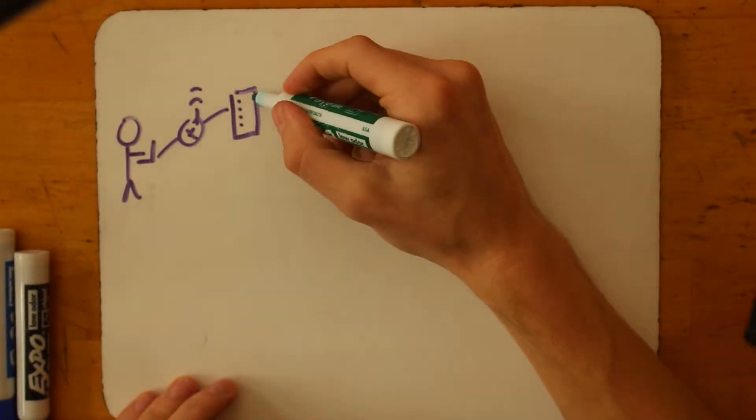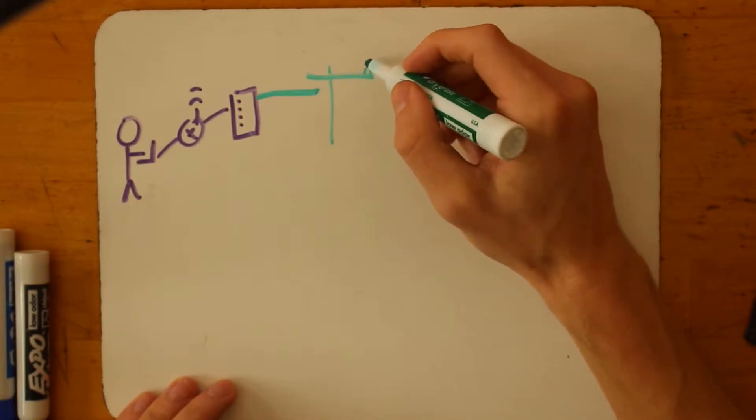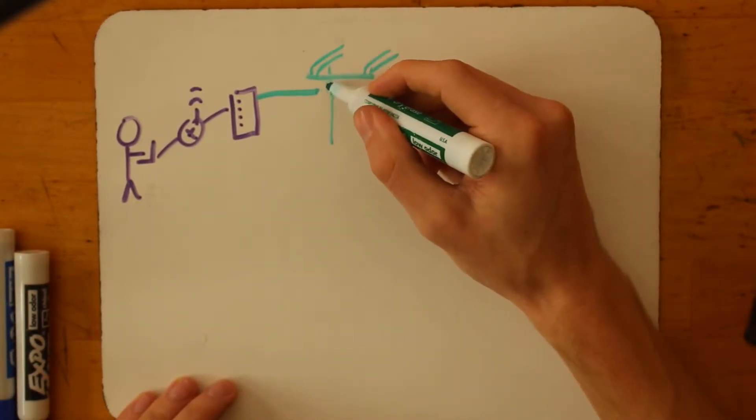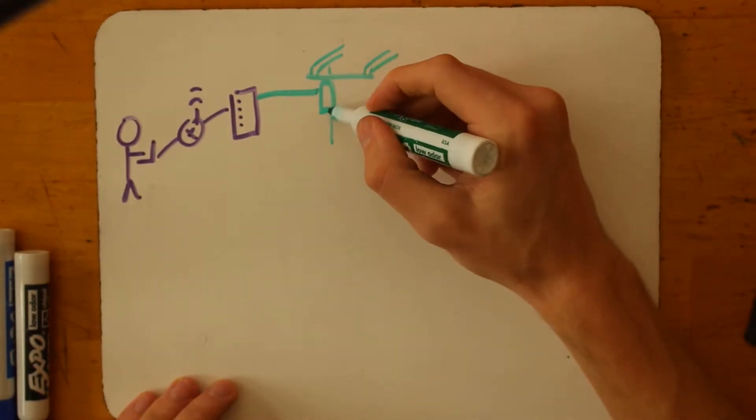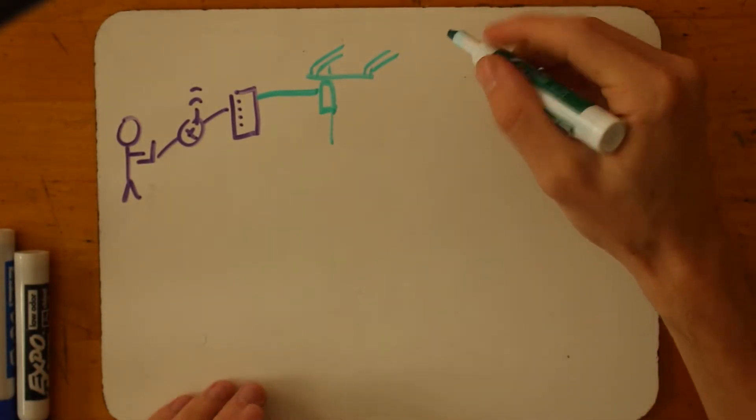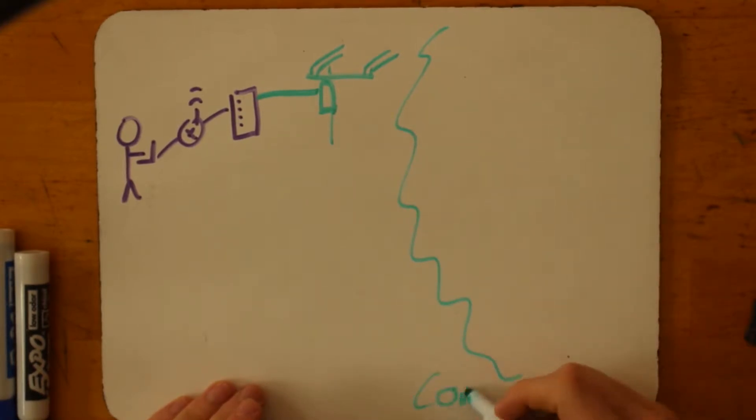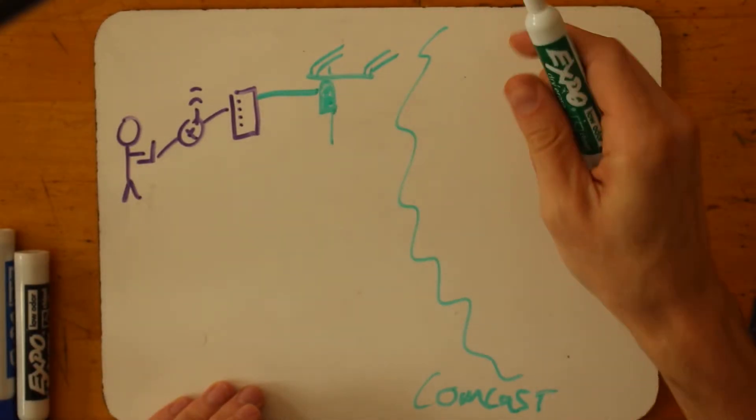That modem is connected for me via a cable wire to a box on my local telephone post owned by Comcast. And then this series of boxes and telephone wires ultimately connects into Comcast's network infrastructure. And really this is the first piece of Comcast's network infrastructure.